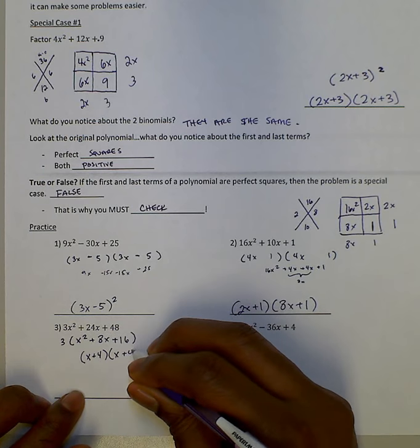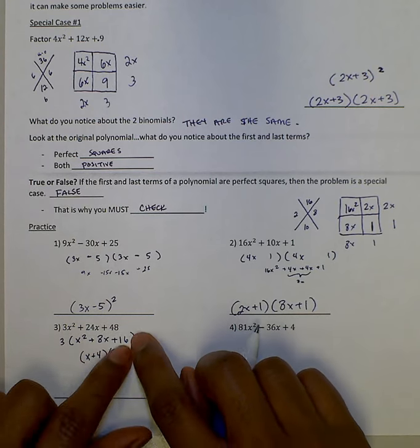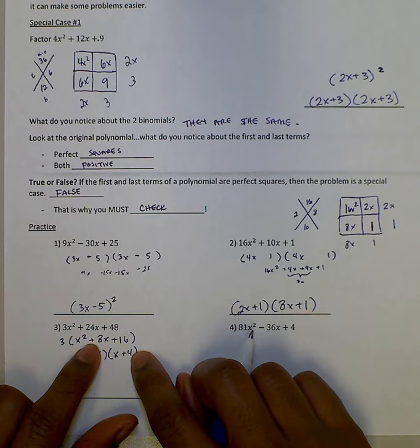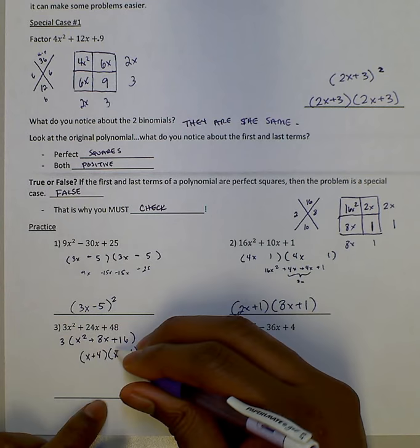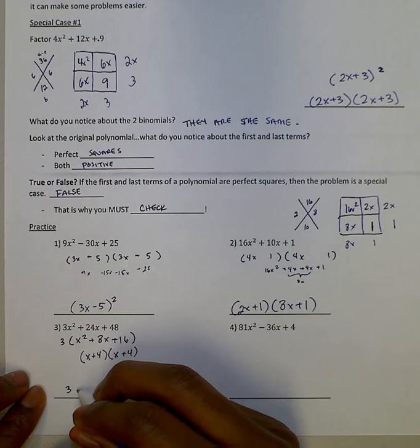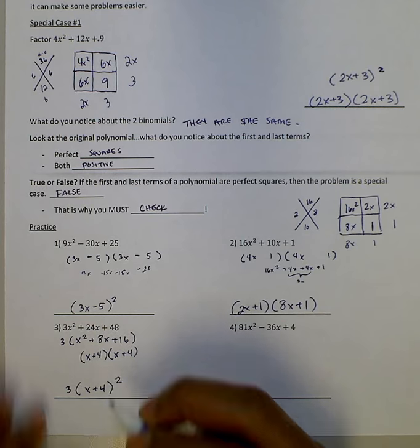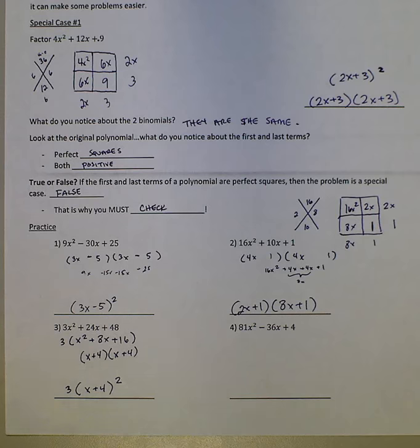Again, I'm getting that because the square root of x squared is x. The square root of 16 is 4. And this middle sign is positive. And then when I distribute, 4x plus 4x is 8x. So it will work. So then my answer would be 3(x plus 4). I could say squared, or I could say 3(x plus 4)(x plus 4).